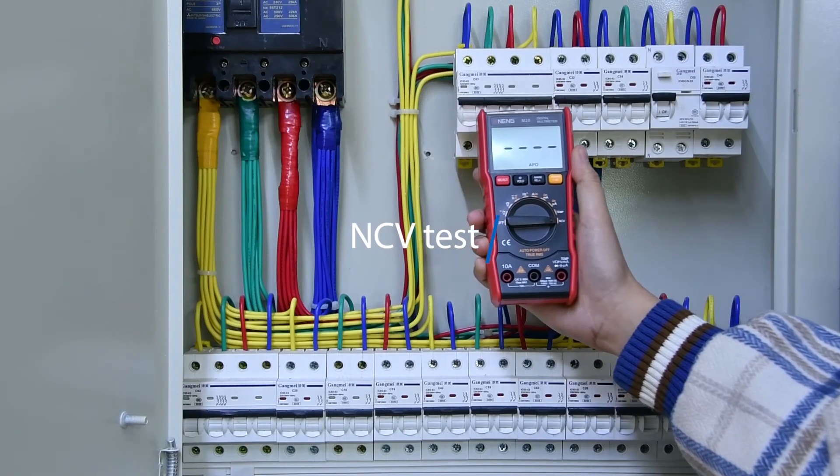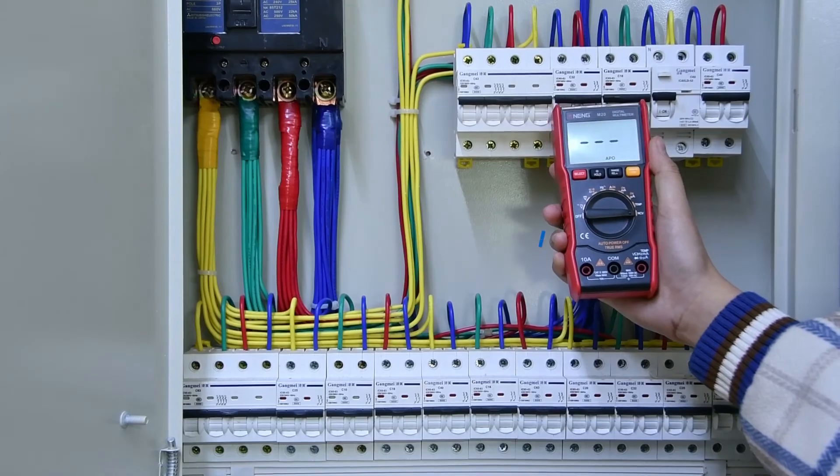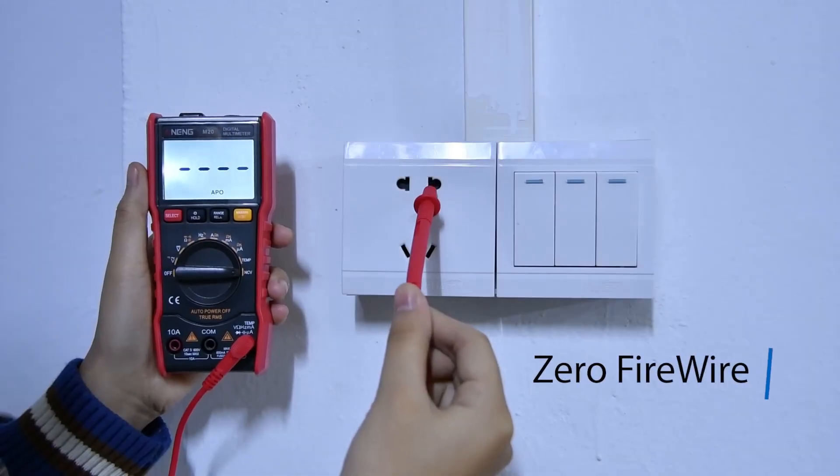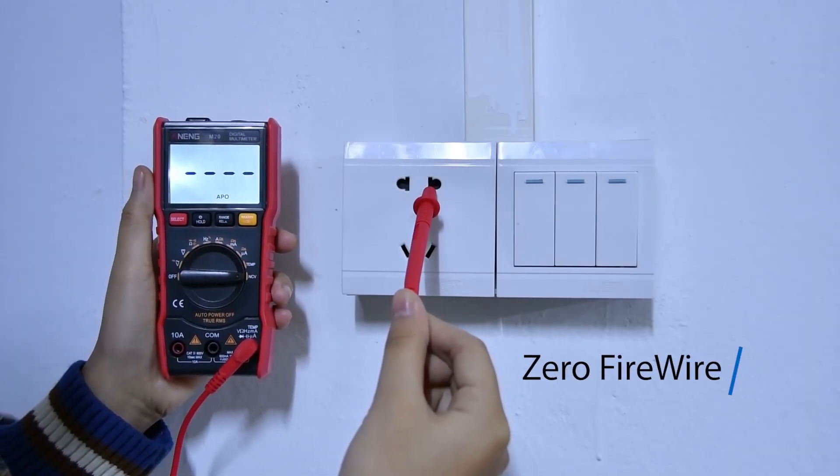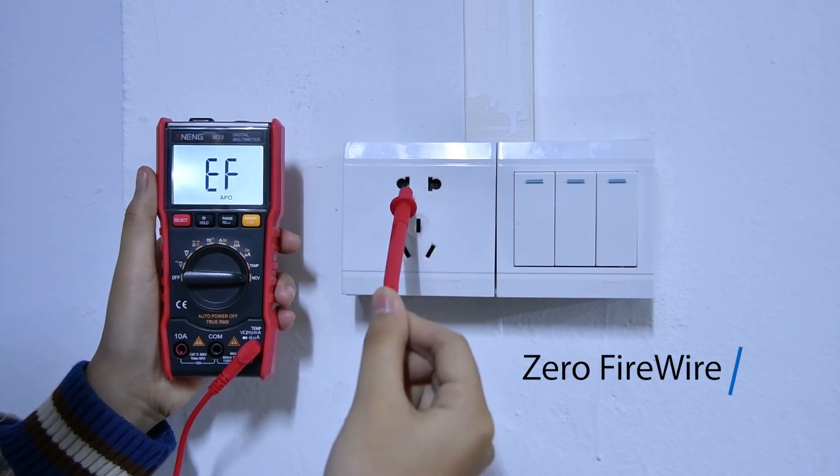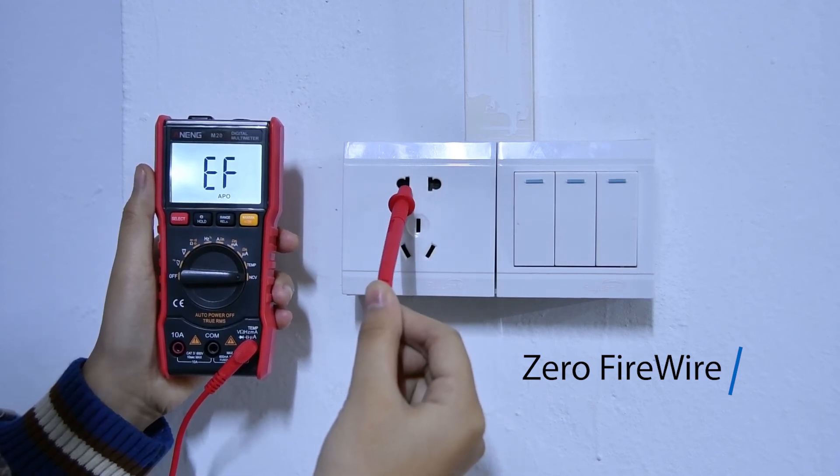DC current measurement, NCV voltage detection. Live wire identification, connect the red pen, use the test pen to take a single measurement.